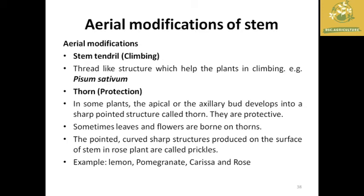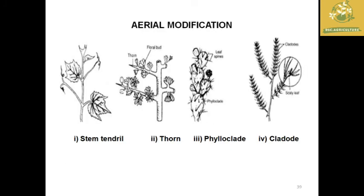The third classification is aerial stem modifications. The first is stem tendrils — thread-like climbing structures; example: peas (Pisum sativum). The second is thorns — short pointed structures found for protection against other animals; examples: lemon, pomegranate, and rose.